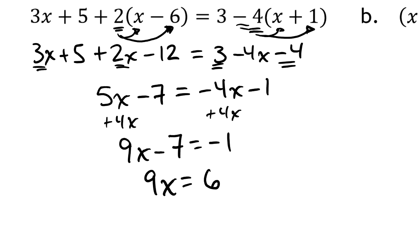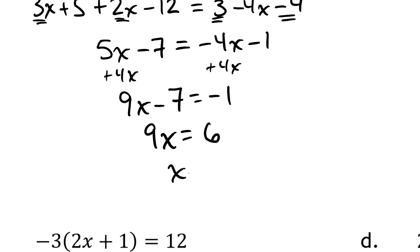So that will give me that 9X is equal to, let's see, negative 1 plus 7. I'm adding 7 to undo subtracting 7. Will give me a 6, positive 6. Negative 1 plus 7.